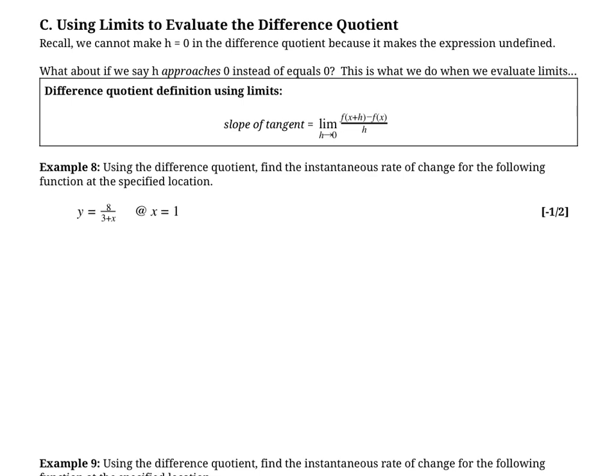So now we know how to approximate the instantaneous rate of change using a difference quotient, but we also have a little bit of background on limits. And we should know by now that limits are a way of getting around dividing by zero and other things like that.